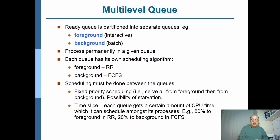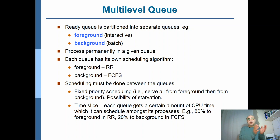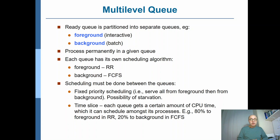Another approach, rather than fixed priority between queues — which results in starvation — is to reserve a fixed proportion of time: say 80% of the time to foreground processes and the remaining 20% to background processes. That's a possible approach, but if the ratio of foreground to background processes varies, adjusting for that becomes a problem.